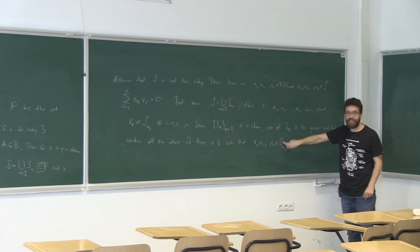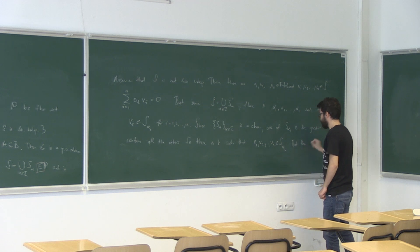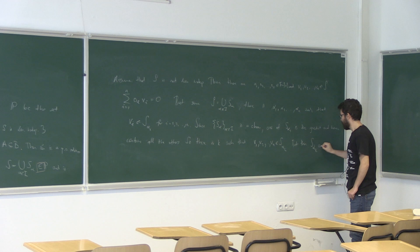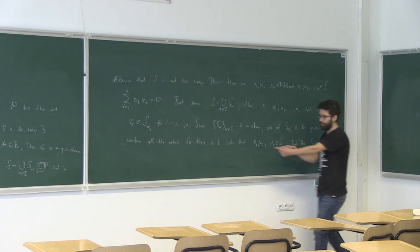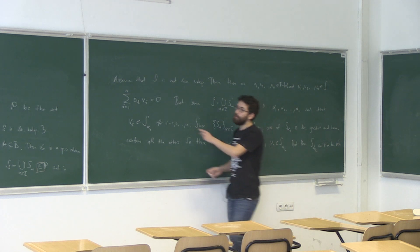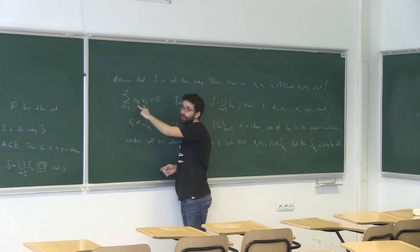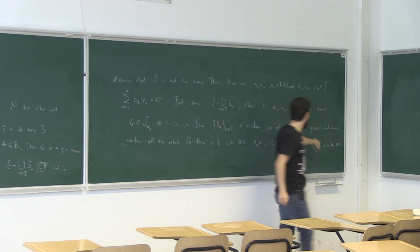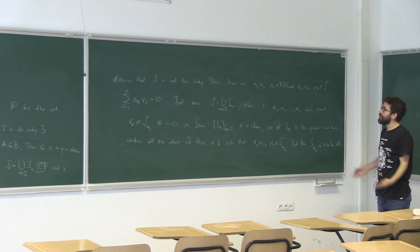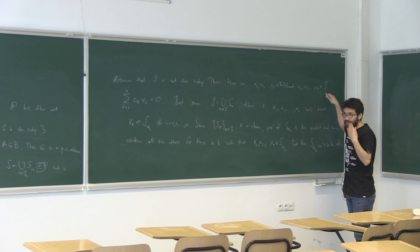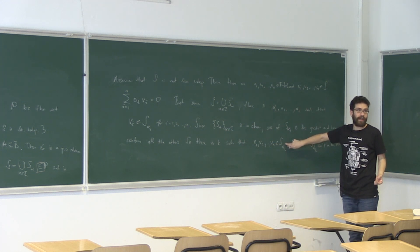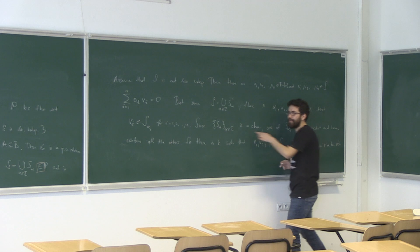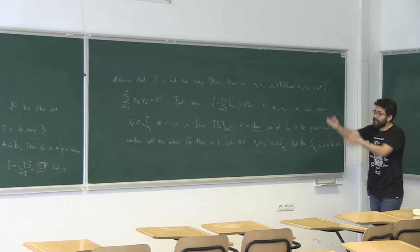So one of these S_{alpha_i} contains all these vectors. But then this S_{alpha_i} can't be linearly independent, because I have finitely many vectors in it whose nonzero linear combination gives zero. The idea is: if this union were linearly dependent, then the witness to linear dependence would come from one of these pieces — not from multiple pieces, but one — because I'm using the fact that this is a chain. Thus, this is linearly independent.